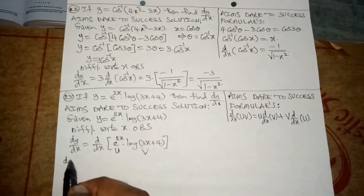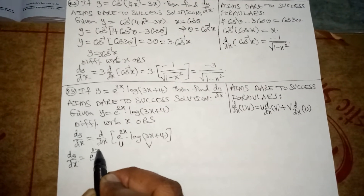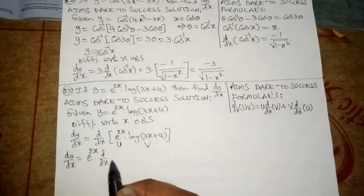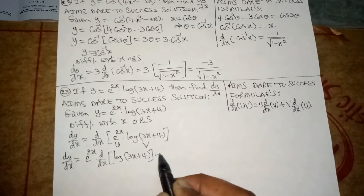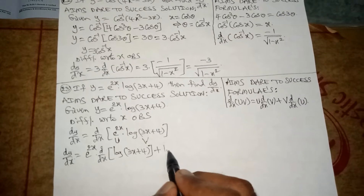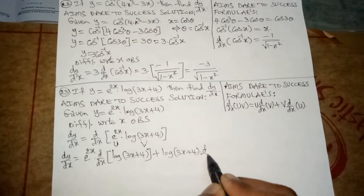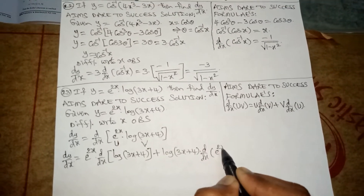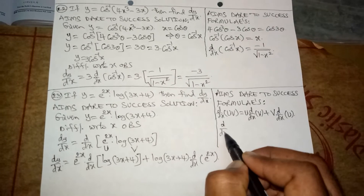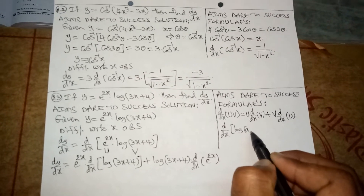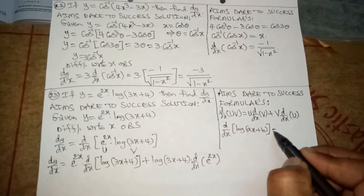Substituting in the formula, we get dy/dx is equal to e^(2x) write outside, into d/dx of log(3x + 4), plus log(3x + 4) into d/dx of e^(2x).